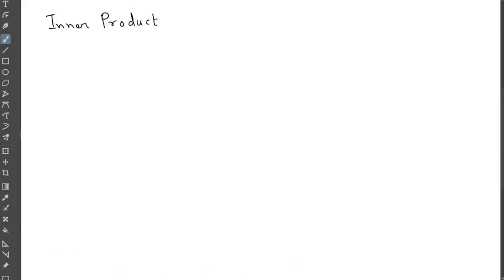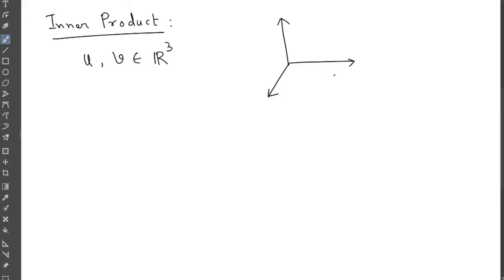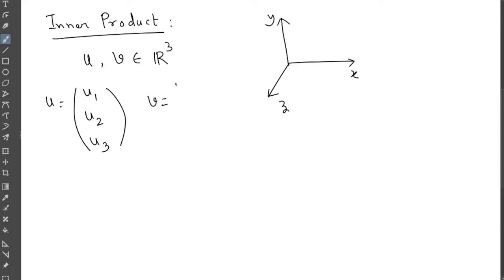So let's first define inner product. Let's consider two vectors u and v from R3. What is R3? R3 is three-dimensional space — we have three axes x, y, z. So u and v are vectors in R3, and obviously u will have three components: u1, u2, and u3.